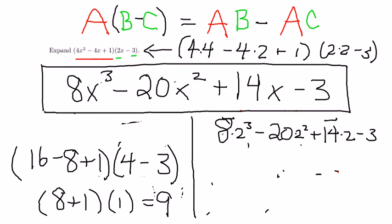Now, 8 times 2 cubed, 2 cubed is 8, so this is 8 times 8. Minus 20 times 2 squared. 2 squared is 4, so this is 20 times 4, plus 14 times 2. 14 times 2 is 28. Minus 3.